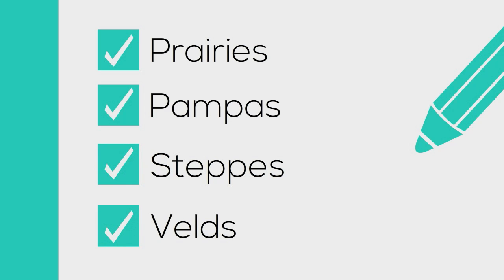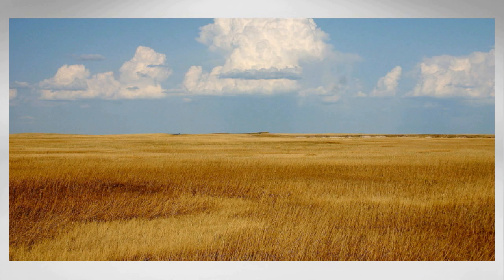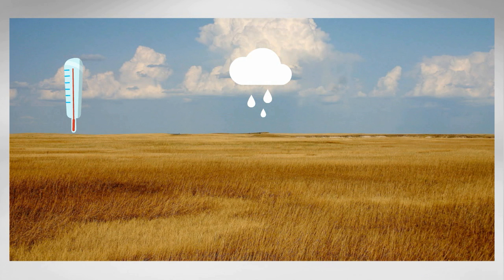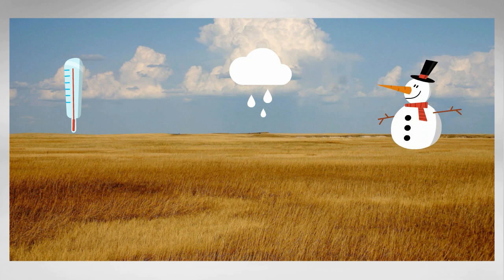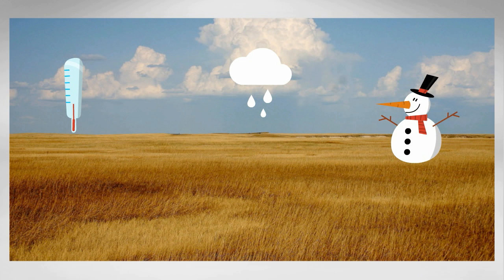Grasslands are famous for not having many trees, and for very fertile soil. Grasslands receive between 25 and 35 inches of rain. Summers can reach up to 100 degrees Fahrenheit, but then it can get below freezing in the winter.